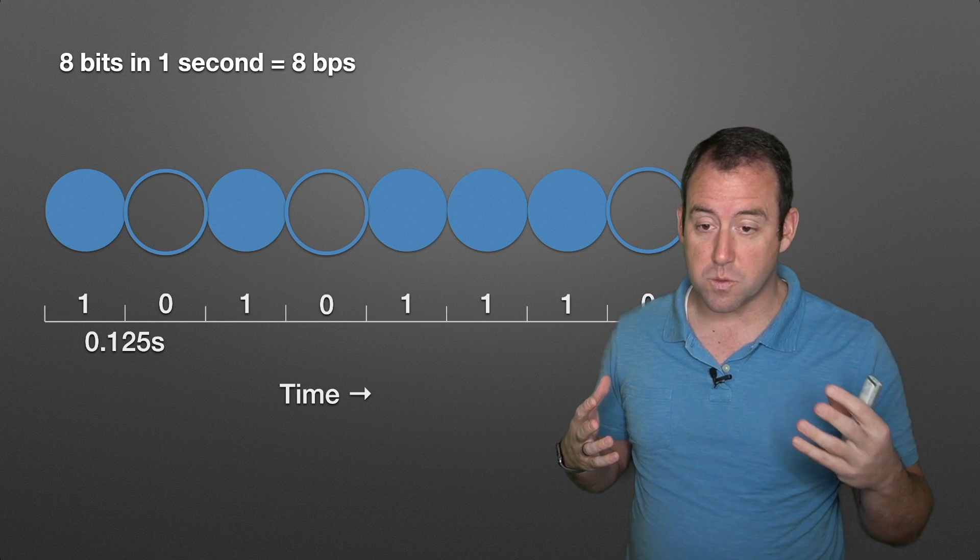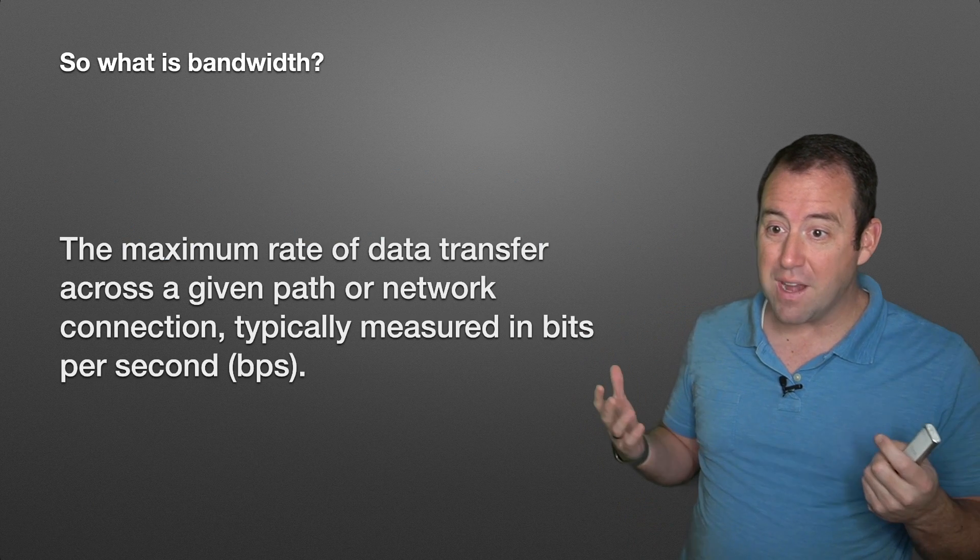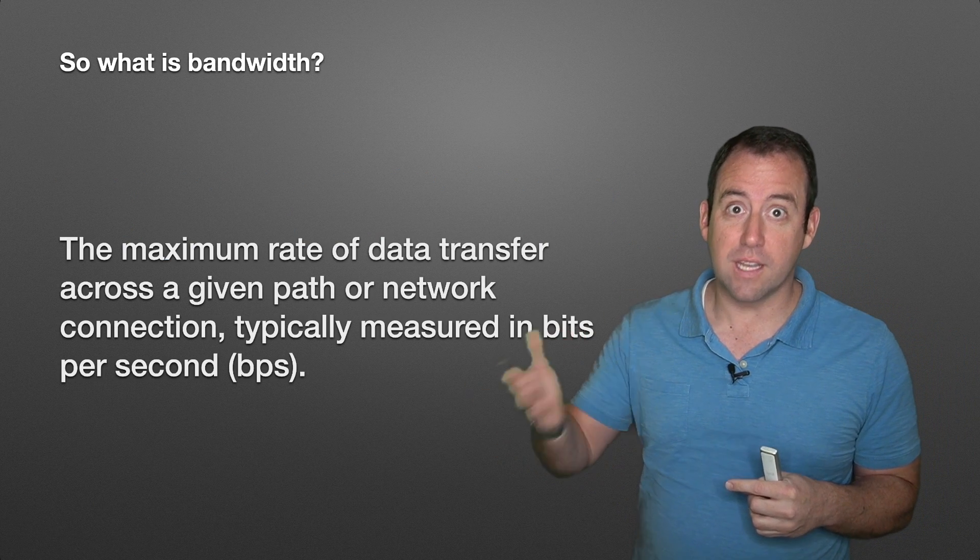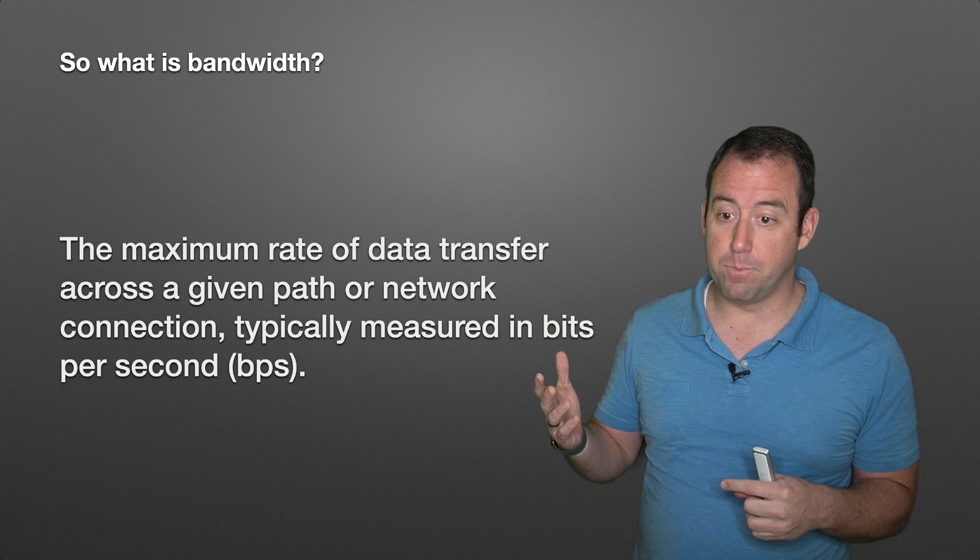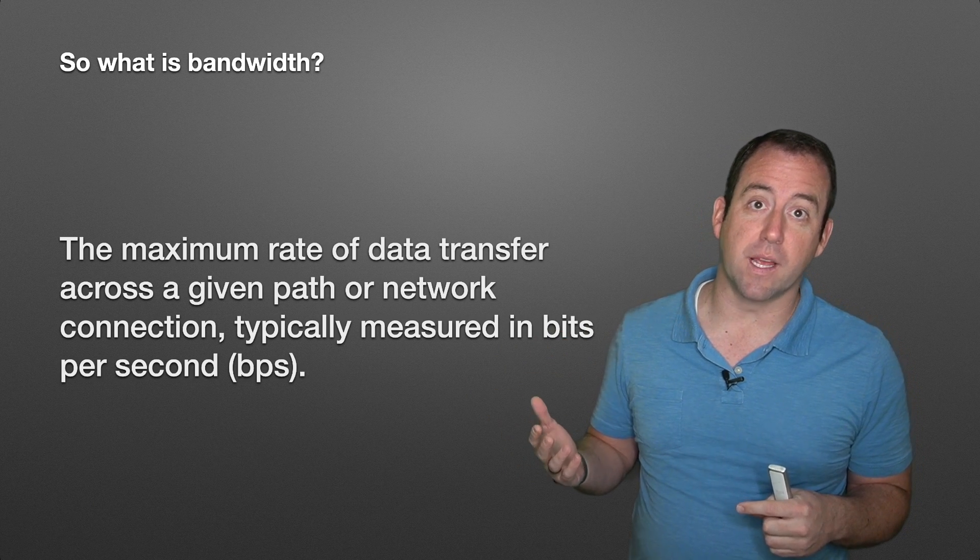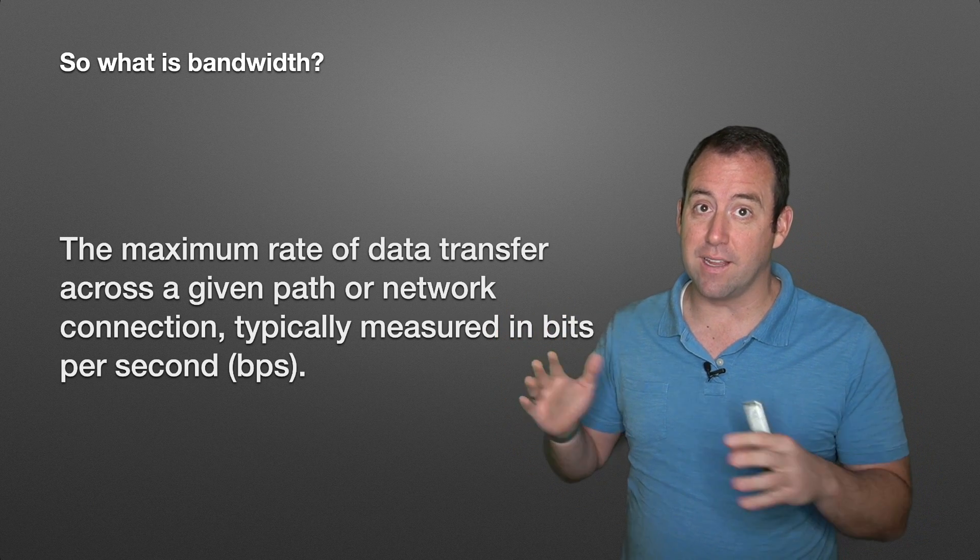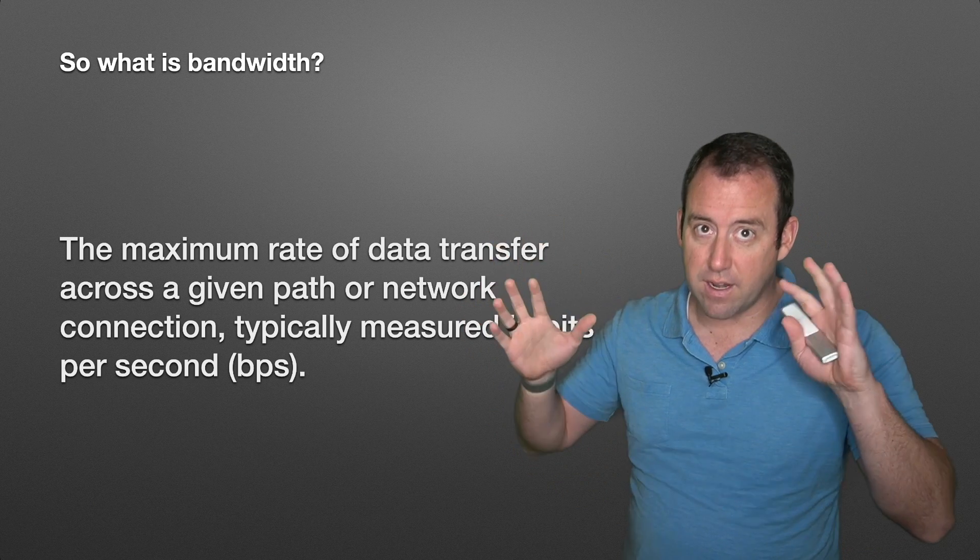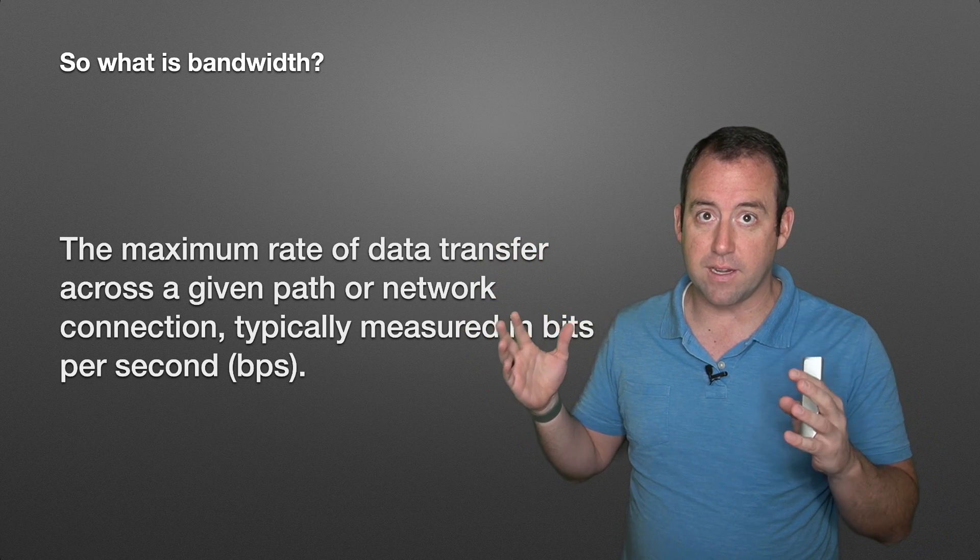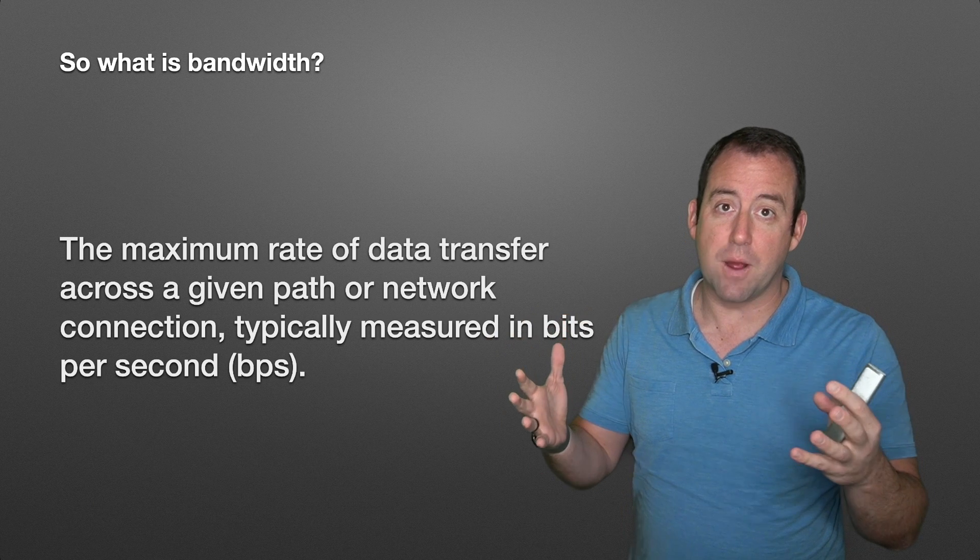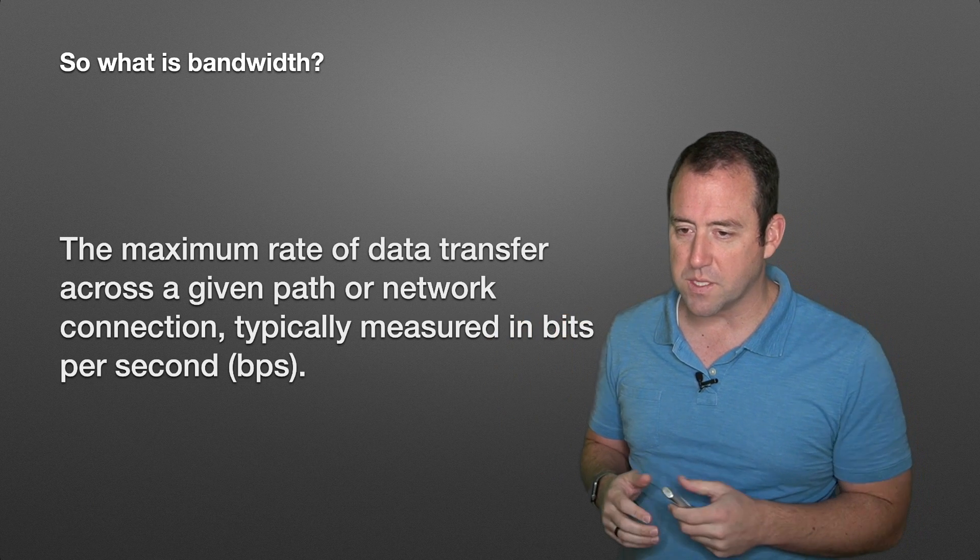And we're going to talk about some of those speeds in just a second. So bandwidth then is the maximum rate of data transfer across a given path or network, typically measured in bits per second. So you'll see bits per second referring to bandwidth often. Historically, it hasn't always meant that. It used to mean, and still in other fields, means other things relating to the frequency bands that things are being sent. But in the network context frequently, it's referring to bits per second.